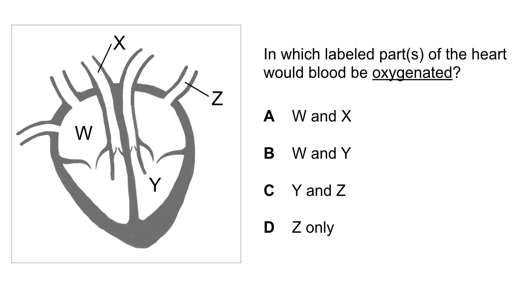Let's look at the sort of thing you might get asked about this on an exam. You could get shown a diagram of a heart and asked in which labelled parts would blood be oxygenated. Based on your understanding, you should recognize that it's areas Y and Z. Z is the pulmonary vein, so it contains blood which has just come from the lungs. Area Y is the left ventricle, and all of the left side contains oxygenated blood.